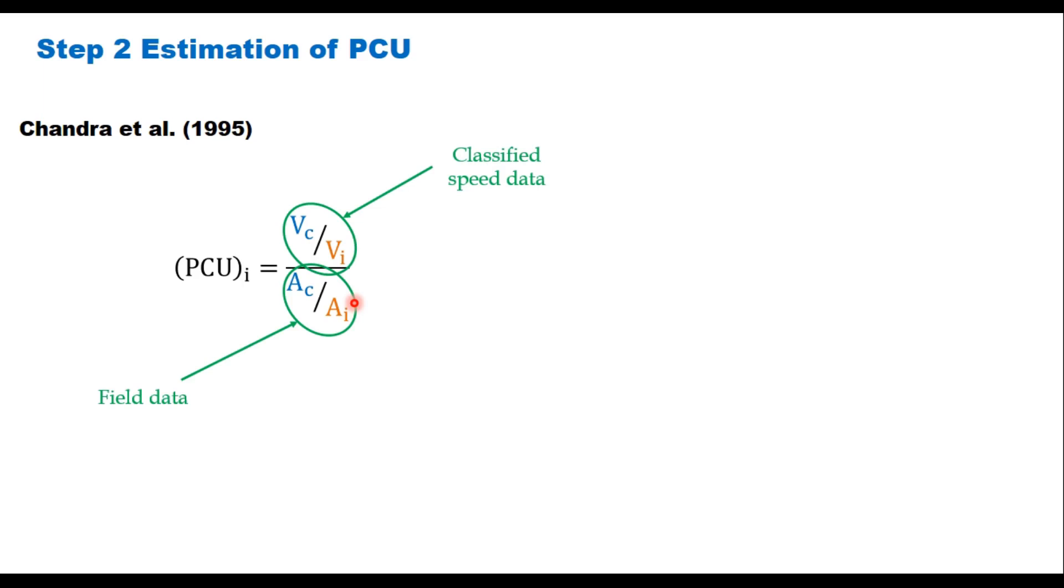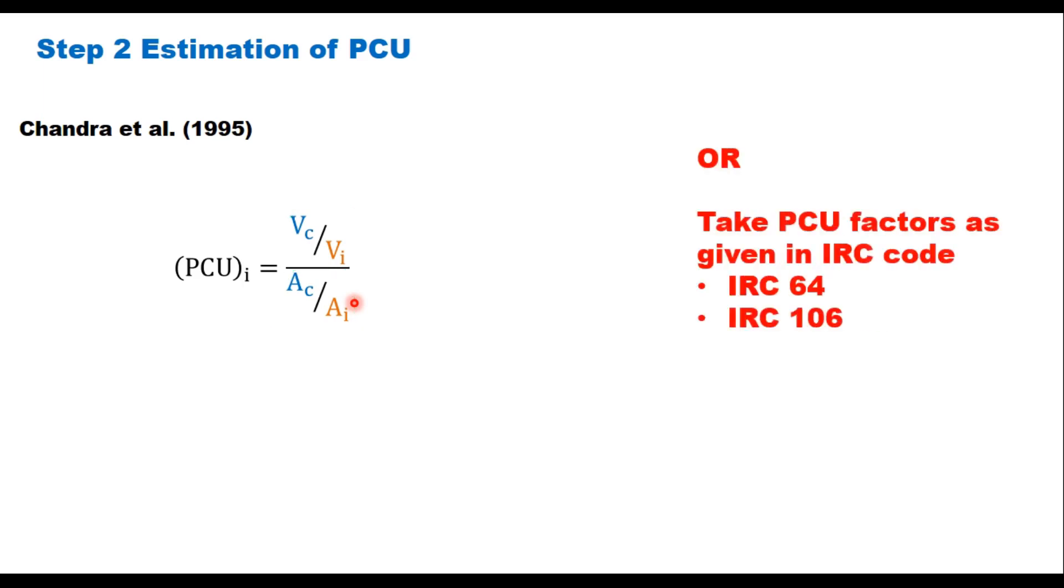These areas are also given in Indo highway capacity manual. You can take directly from there or you can take PCU factors for individual vehicle category from the IRC code also.